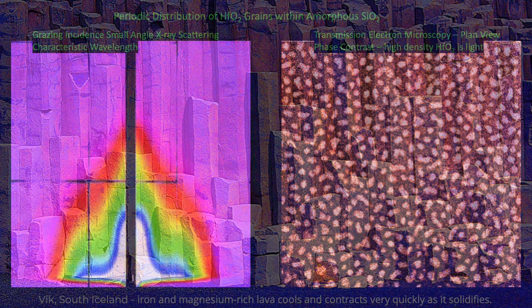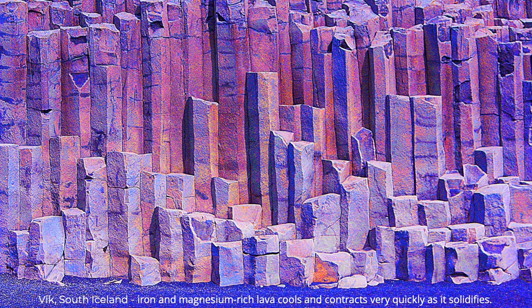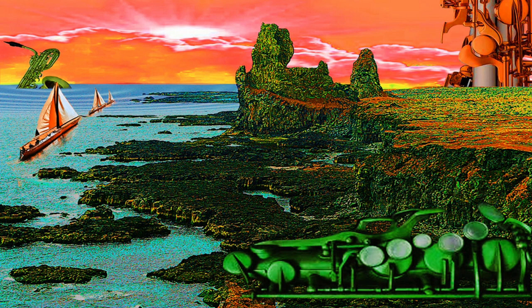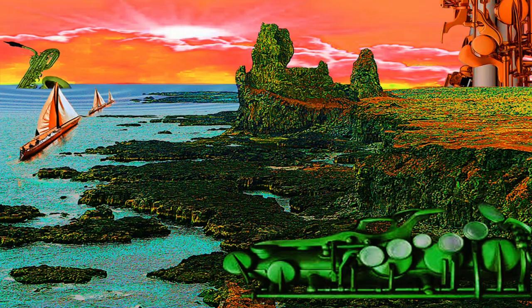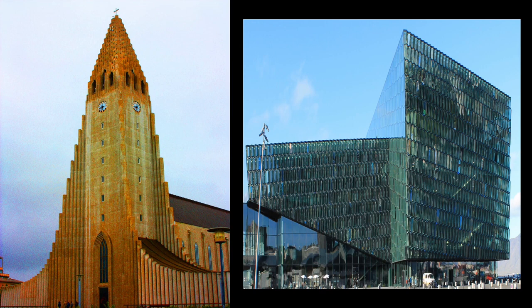Lava flows often display hexagonal columnar jointing due to contraction during quick cooling. The North American and Eurasian tectonic plates are drifting away from each other, pulling Iceland apart at about the rate that our fingernails grow. New lava renders iron, silicon, oxygen, titanium, potassium, magnesium, aluminum, and of course zirconium and hafnium — elements critical to life and prevalent in electronics devices. Icelanders embrace the columnar structure in architectural highlights, such as this cathedral and concert hall in Reykjavik.